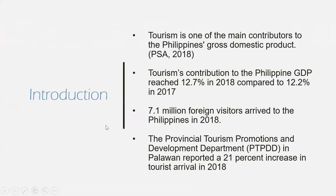As we all know, tourism is one of the biggest industries in the Philippines, and it is a thriving industry. It's one of the main contributors to the country's GDP, with a 12.7% increase in 2018 compared with the previous year. The statistics also show that the number of tourist arrivals keeps growing each year — 7.1 million foreign visitors arrived in 2018. Palawan, for example, is the country's premier destination, with the Provincial Tourism Promotions and Development Department reporting a 21% increase in tourist arrivals in 2018. That is why there is a need to discover new destinations to accommodate the influx of tourists in the province.